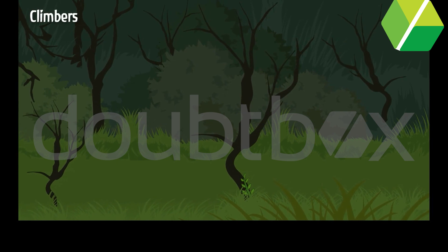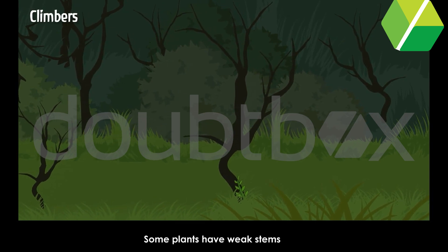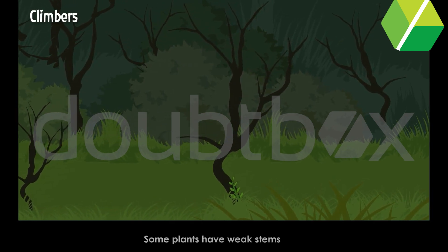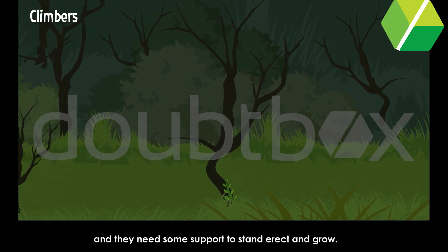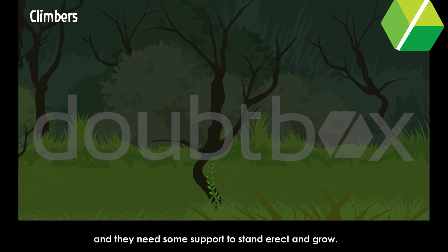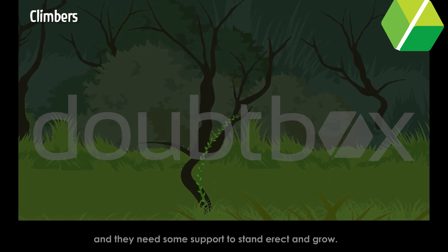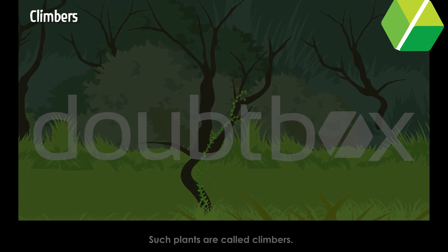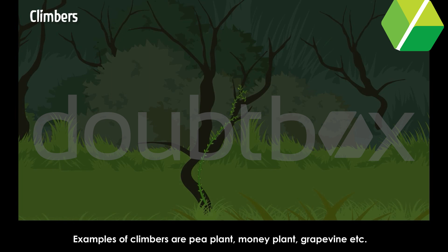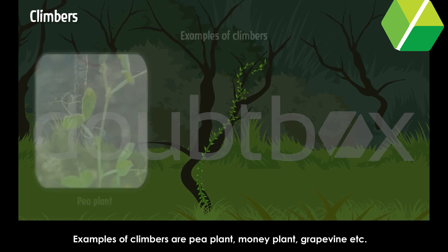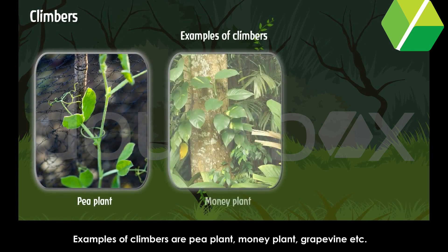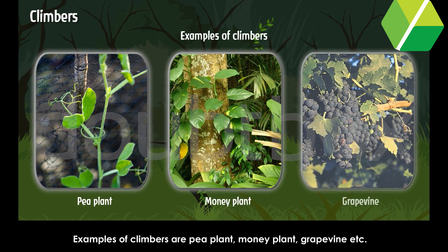Climbers: Some plants have weak stems and they need some support to stand erect and grow. Such plants are called climbers. Examples of climbers are pea plant, money plant, grape vine, etc.